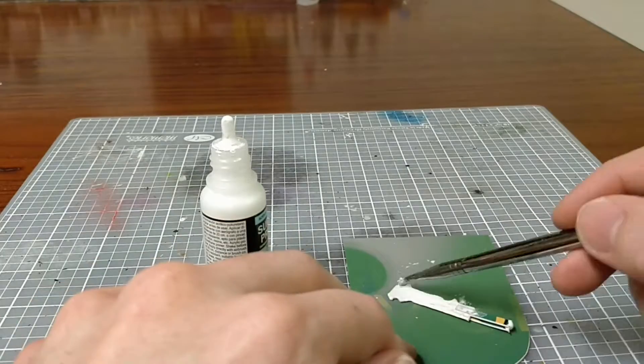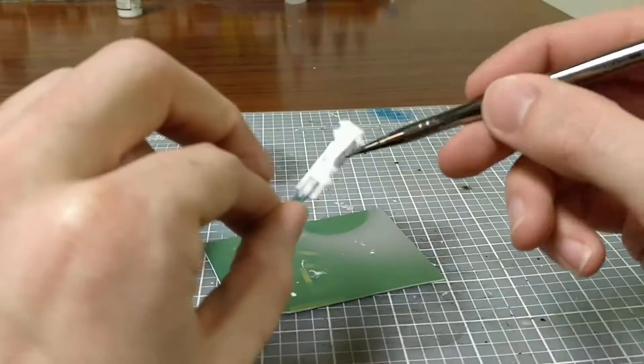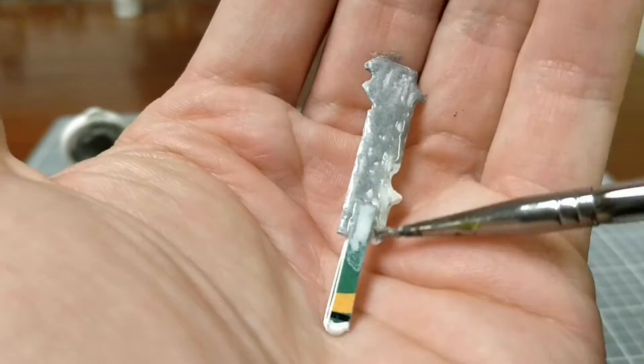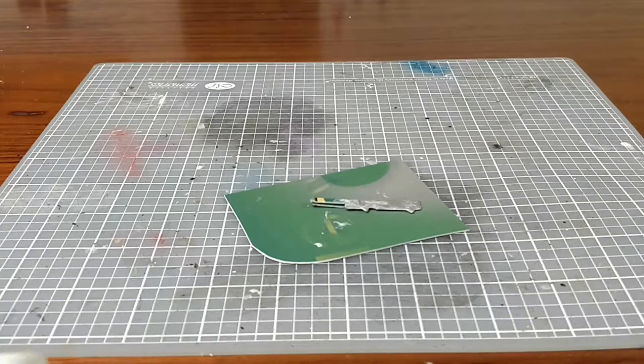Then after that, I painted it with some Quicksilver by P3. Seems to be in all of my videos, apparently. And just painted the blade of it, and then that little nubbin that'll stick out from the handle will be covered up with cloth tape.